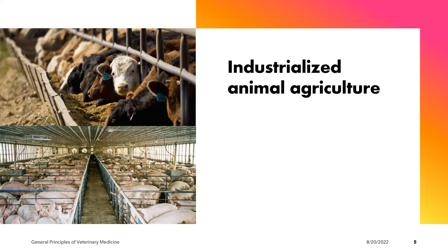We also have industrialized animal agriculture. Industrial agriculture is basically a large-scale intensive production of animals. One of the problems seen in this type of production is the harmful use of antibiotics, so that even when the animals are healthy, they are still being exposed or administered with antibiotics.